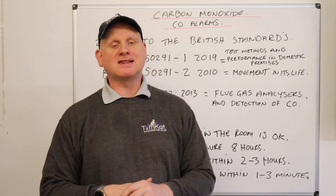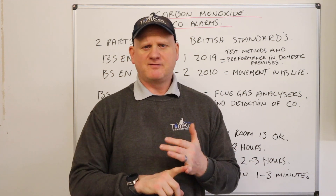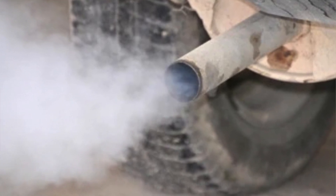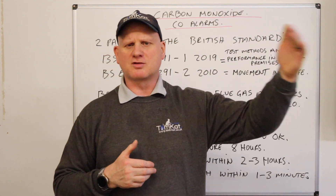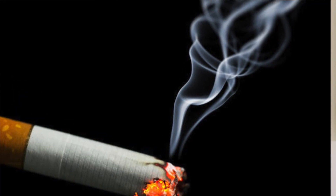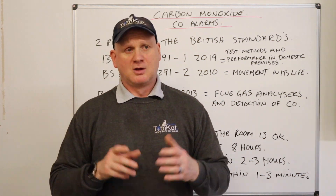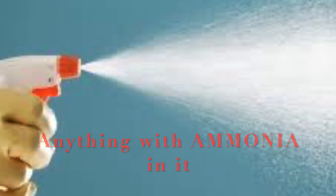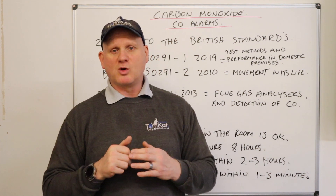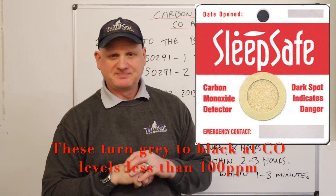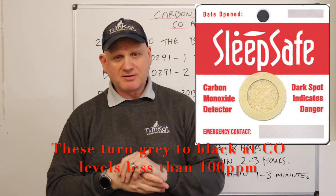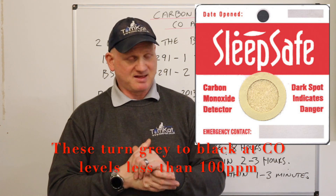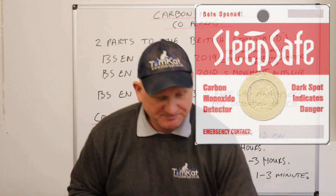Are there things that can accidentally set off CO alarms? Yes — car fumes coming into the house, whether you're running a car in a garage or close to car parks. Smoking: if customers are heavy smokers they can set their own alarms off. Spillage of domestic cleaning products can also trigger CO alarms. And if you've got one of these little spot detectors — which are absolutely useless and you shouldn't be relying on — they can be activated by hairspray. Get rid of it and get a proper alarm.